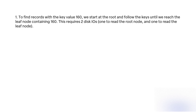Query 1: To find records with the key value 160, we start at the root and follow the keys until we reach the leaf node containing 160. This requires 2 disk I/Os: 1 to read the root node and 1 to read the leaf node.